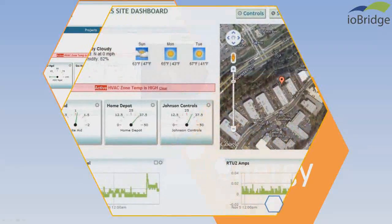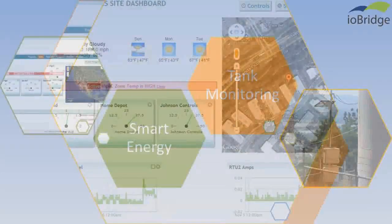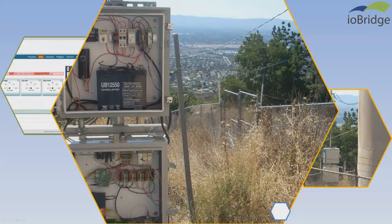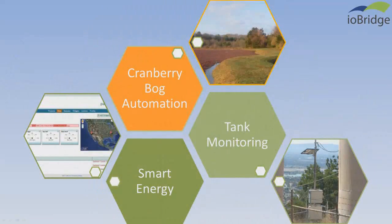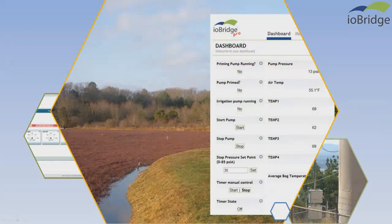From smart energy monitoring in government buildings in California, to town water tanks in remote locations, to automating the sprinkler system of a cranberry bog on Cape Cod to prevent the cranberries from freezing in the spring, and monitoring the system while working halfway around the world.